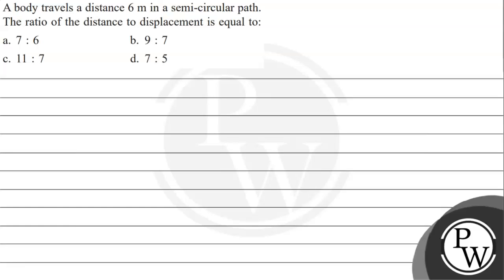Hello everyone, let's read the event question. The question says: A body travels a distance 6 meters in a semicircular path. The ratio of the distance to displacement is equal to: option A, 7 is to 6; option B, 9 is to 7; option C, 11 is to 7; option D, 7 is to 5.